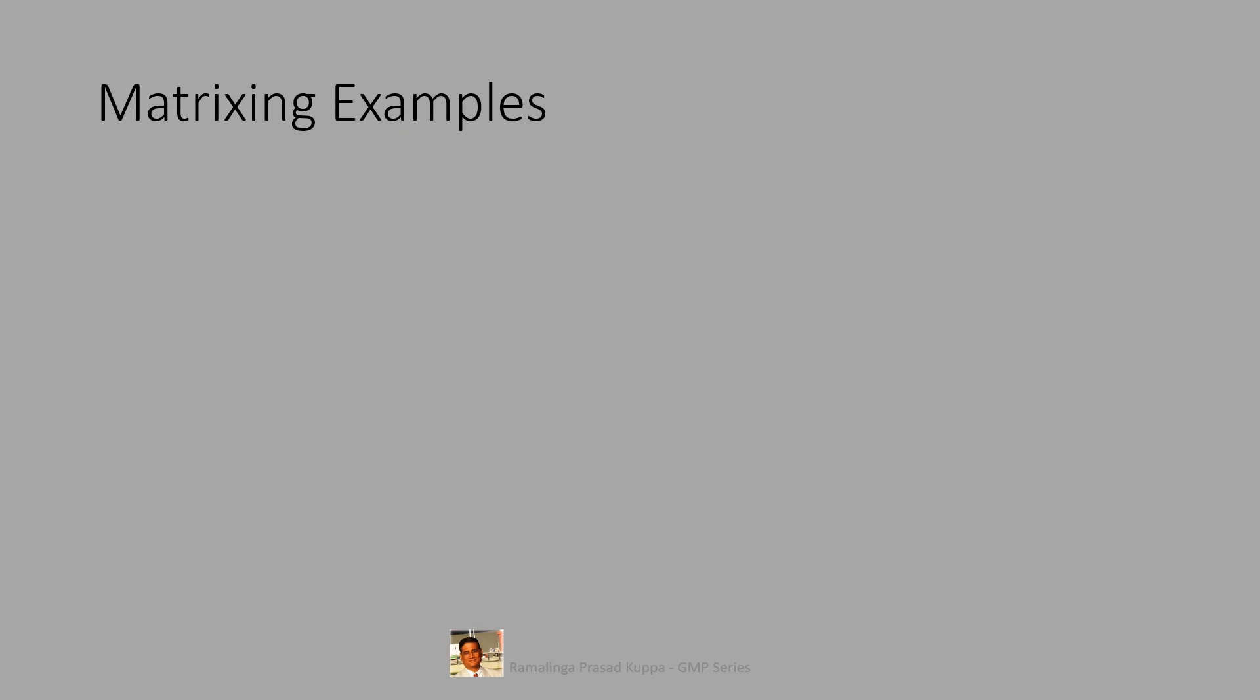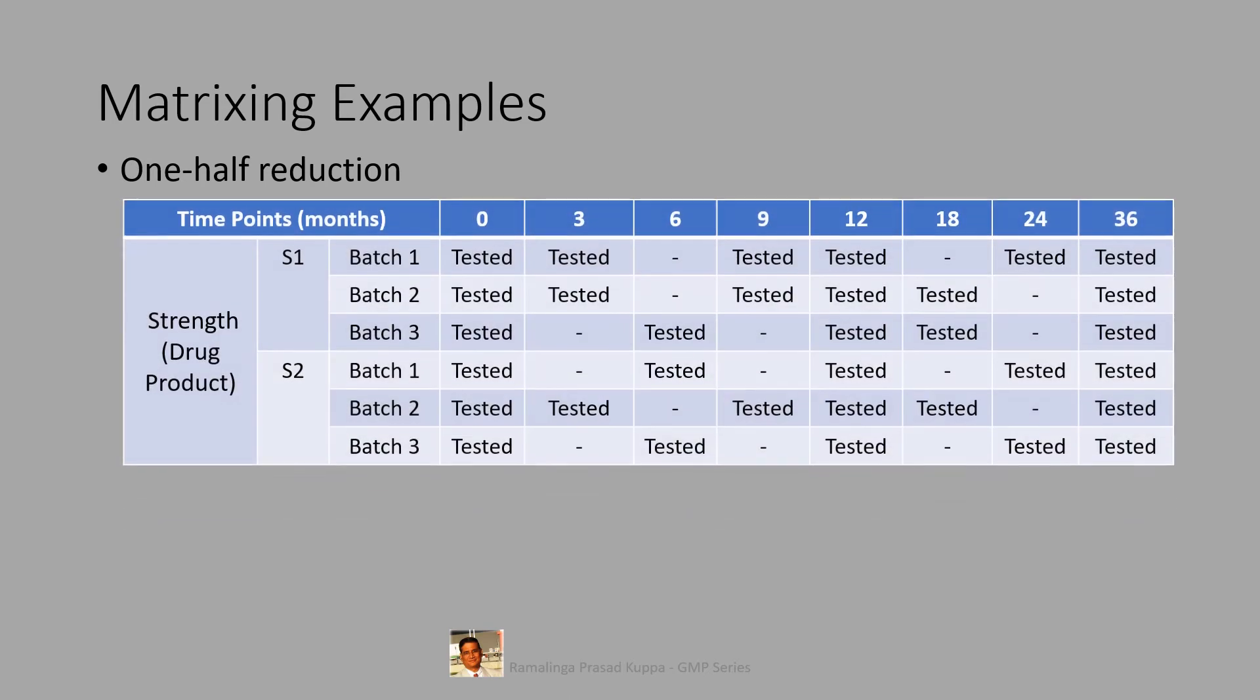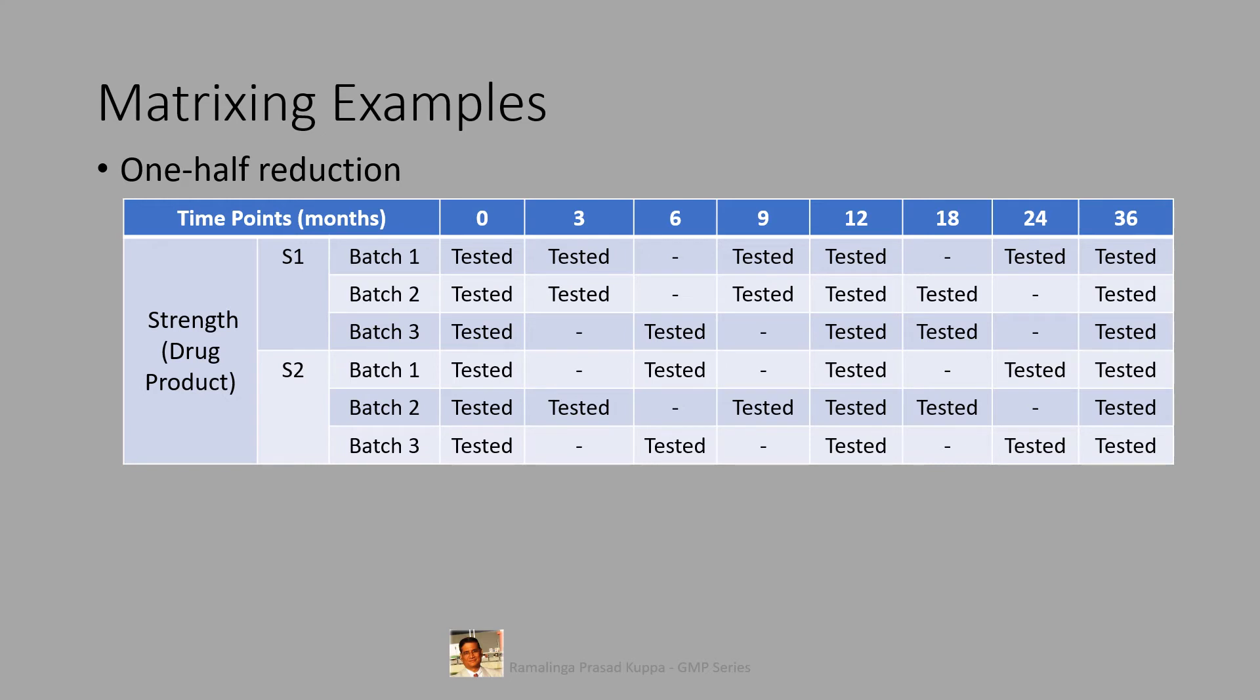Let us see some matrixing examples. One half reduction for drug product. Let us see the examples here for one half reduction. In this table, only three batches are considered for testing at three months time session. They are one, two, and three. Same pattern can be seen for six months, nine months, 18 months, and 24 months. But please note that they are staggered. They are not in the same type of testing, but they are all staggered. But also, notice that full testing is done at zero time, at 12 months, and 36 months.